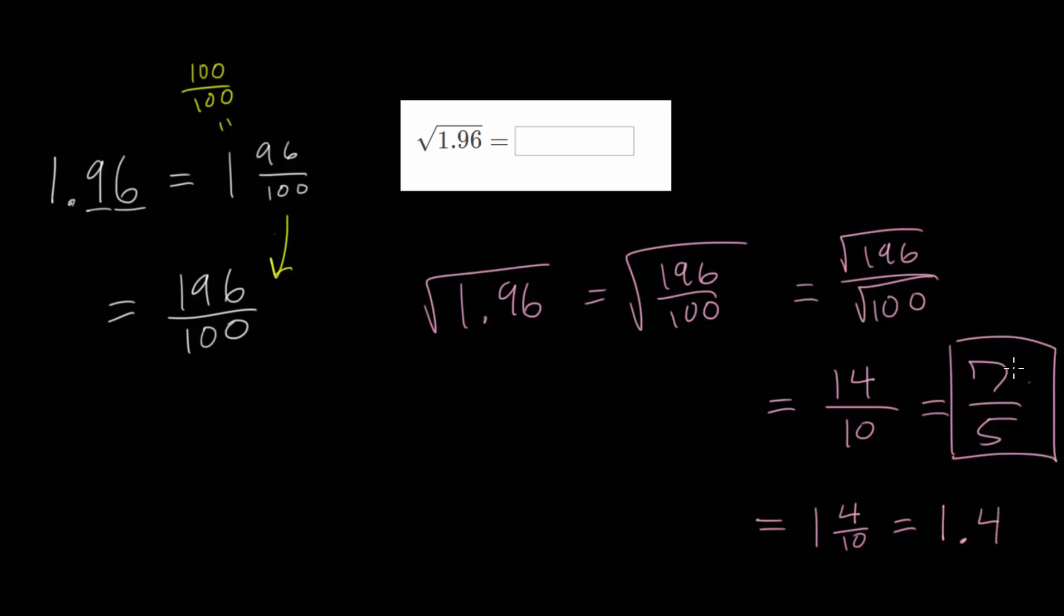Now to check this one, you could either multiply fractions, or you can multiply decimals. So let's check this, we'll multiply decimals this time. So we can do 1.4 times 1.4. And hopefully, if we did this correctly, we'll get back 1.96.